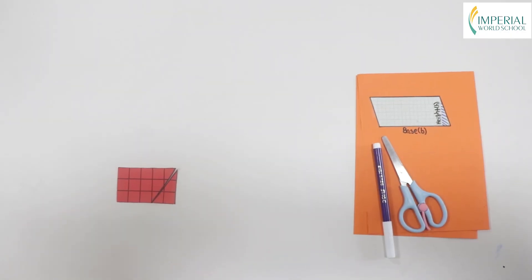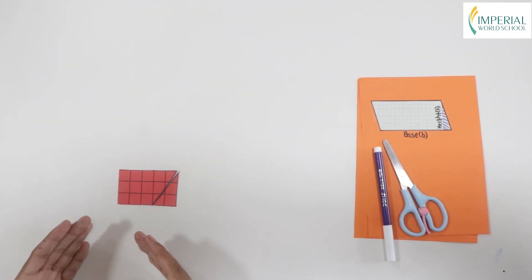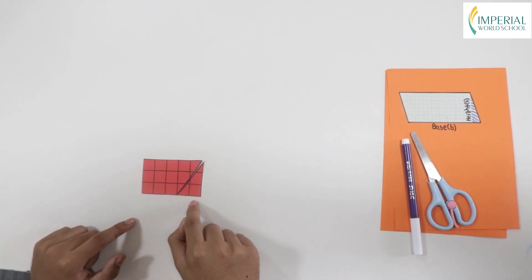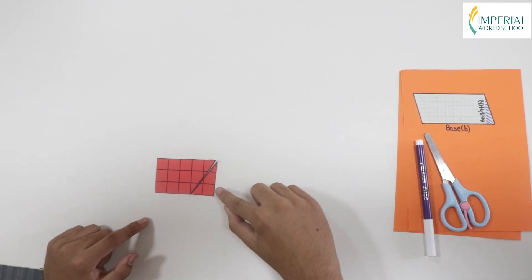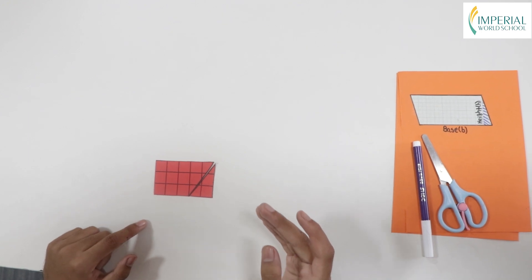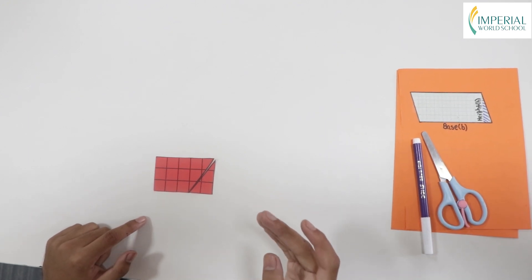We know that the area of a rectangle is length into breadth with the length having 5 units (1, 2, 3, 4, 5) and the breadth having 3 units (1, 2, 3), so 5 into 3 becomes 15. Now we know the area of a rectangle is 15 square units.